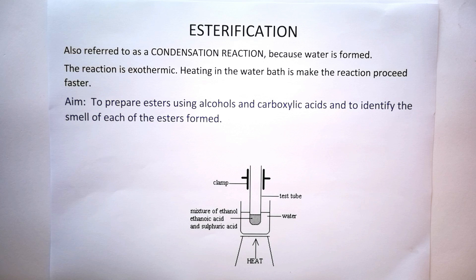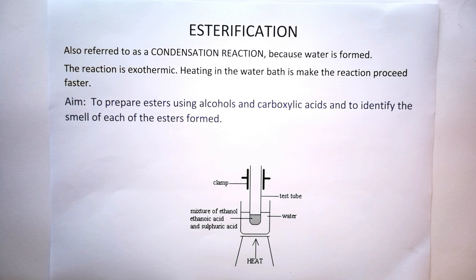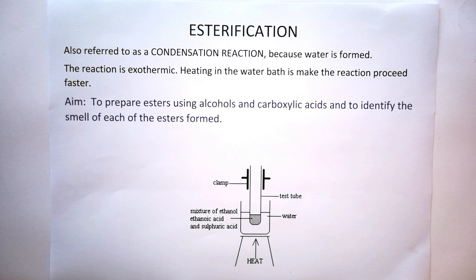The esterification practical involves mixing alcohols and carboxylic acids, normally in a test tube heated over a water bath. We'll discuss later why a water bath is used. Esterification is the reaction between an organic alcohol and an organic carboxylic acid to form esters and water. It is also referred to as a condensation reaction because water is formed. This reaction is exothermic, but we still heat the test tube over a water bath so the reaction proceeds faster.